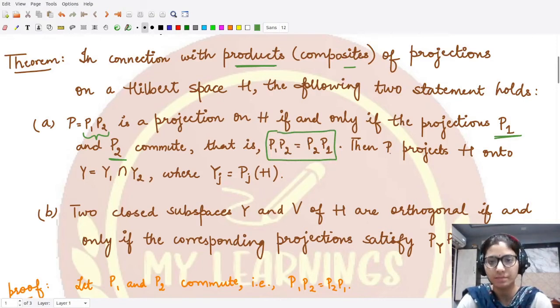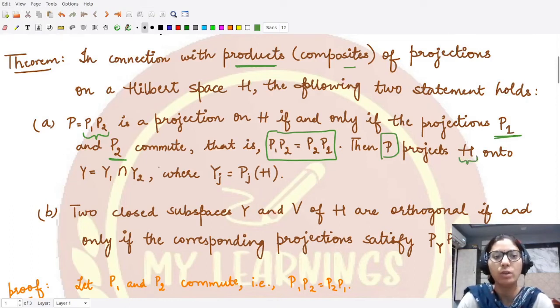And another thing: the product projection P should project the given Hilbert space H onto some closed space. What is this closed space? This is the intersection of two spaces Y1 and Y2, where Y1 is the space where P1 projects H onto Y1, and Y2 is where P2 projects H onto Y2. So the product would be projected towards their intersection.